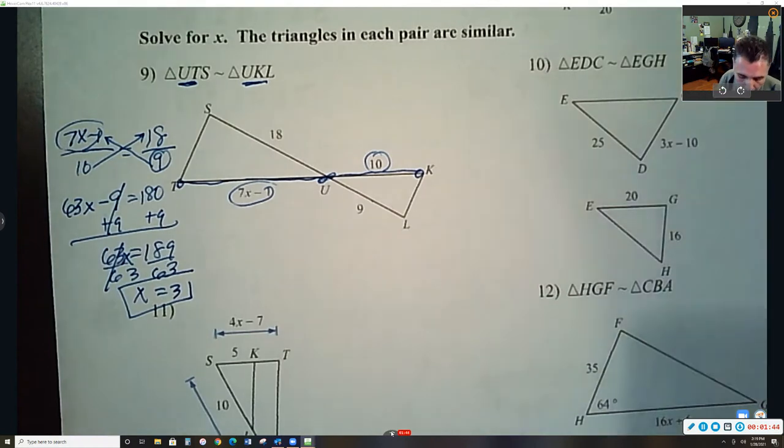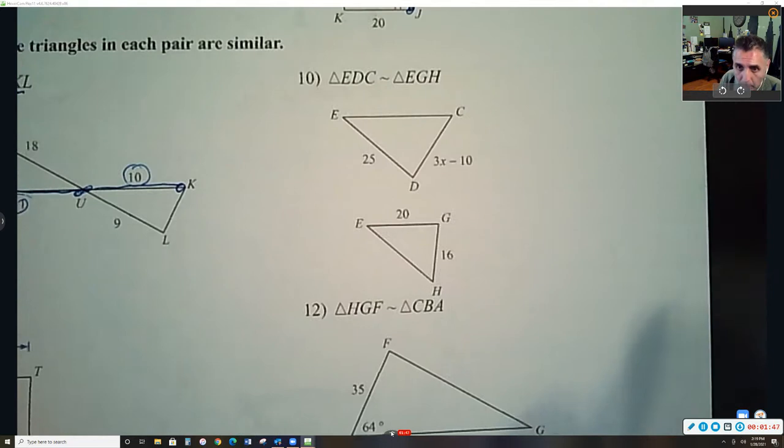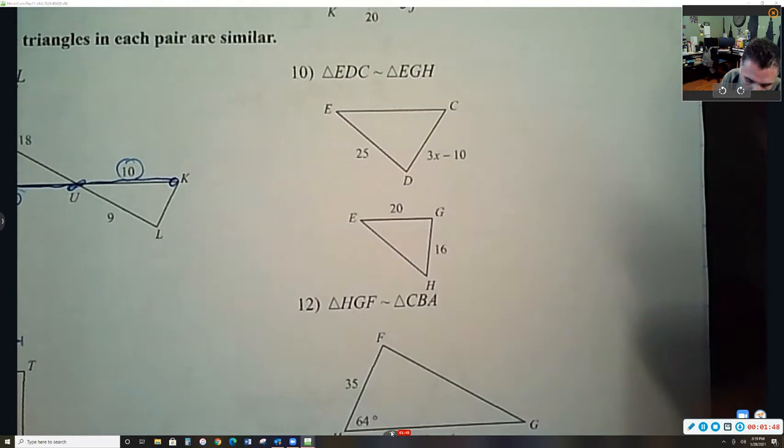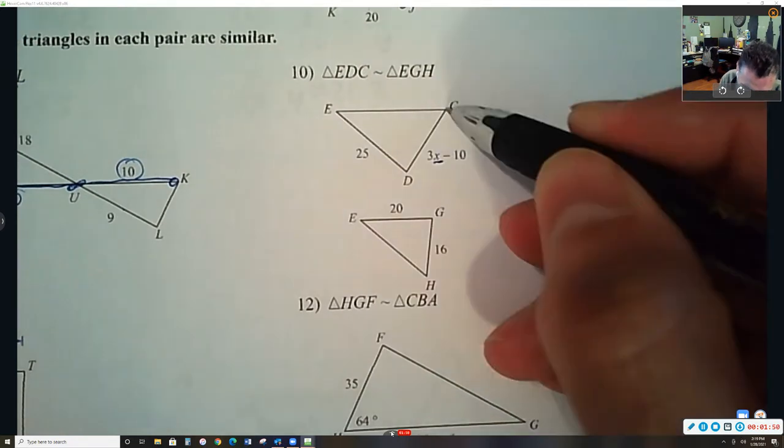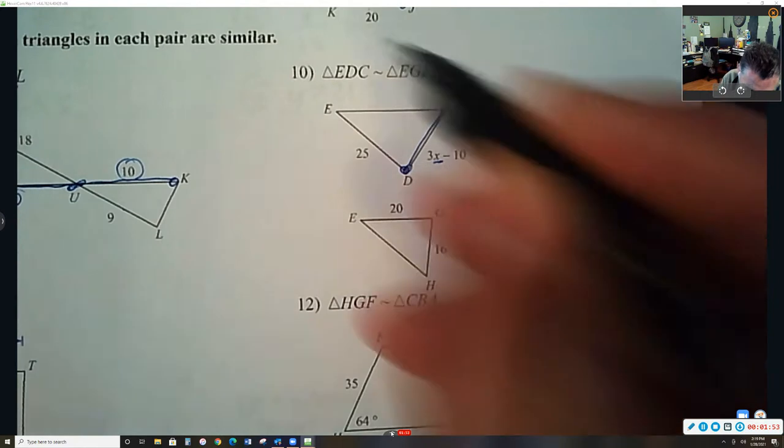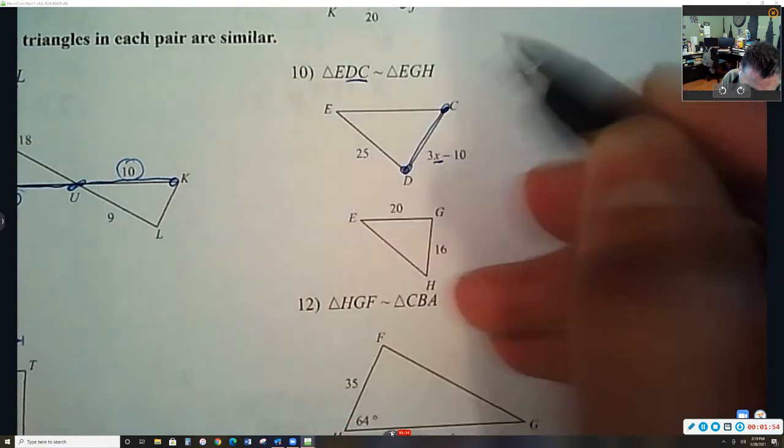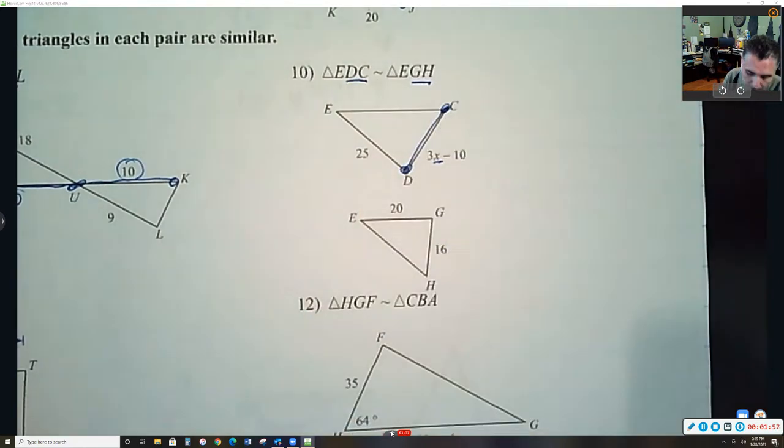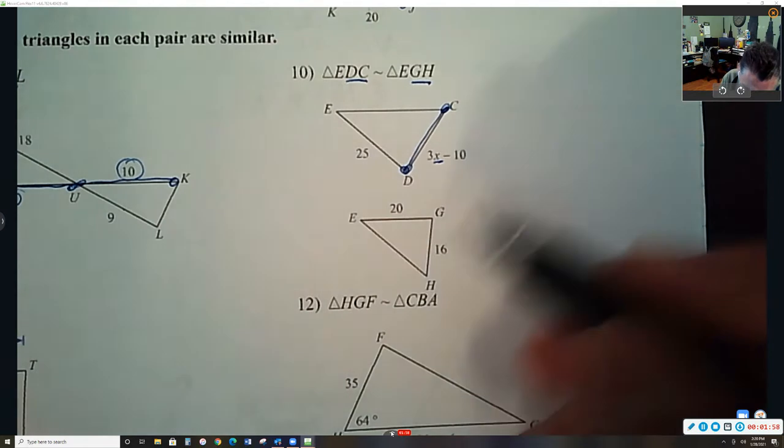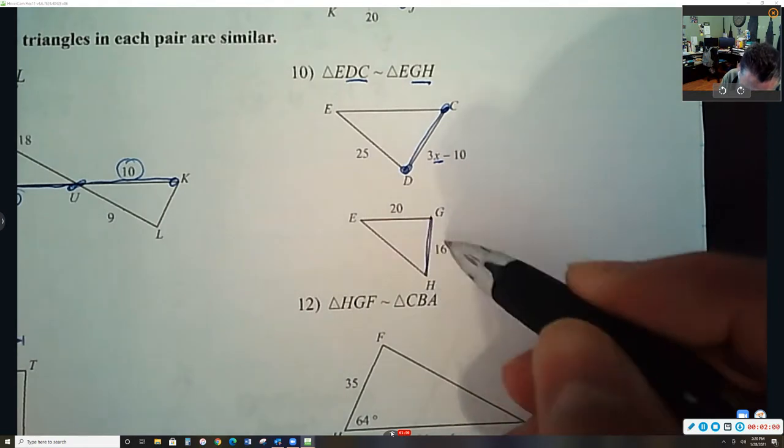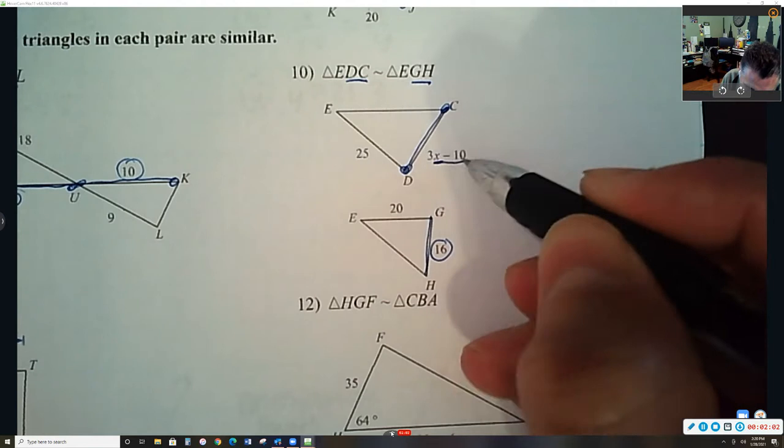Pause that, I'm gonna move on. So then when we look at this one, again here's the x, that's side CD. Here is C and D. So that matches up with H and G. Here's H and G. So I know these two sides match up.